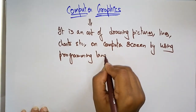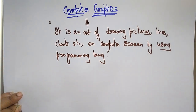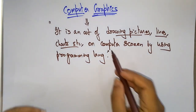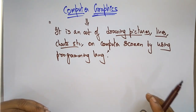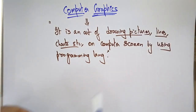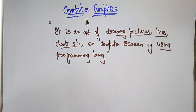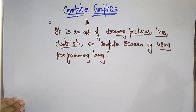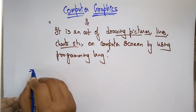Computer graphics is an art of drawing pictures, lines, animations, charts, etc. on a screen by using some programming language. The activities that involve in computer graphics are computations, creations, and manipulations of data. So that is the definition of computer graphics.